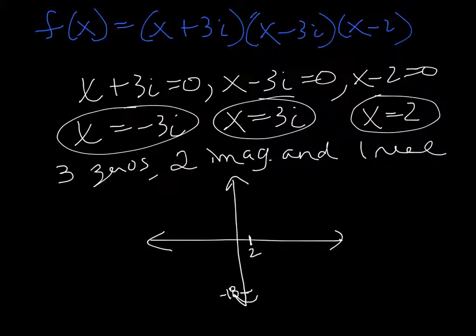So the graph looks something like this. It goes through negative 18, and then at some point, that's not completely horizontal. That's not the best graph. But the idea is it comes through this y-intercept and it goes through an x-intercept of 2.